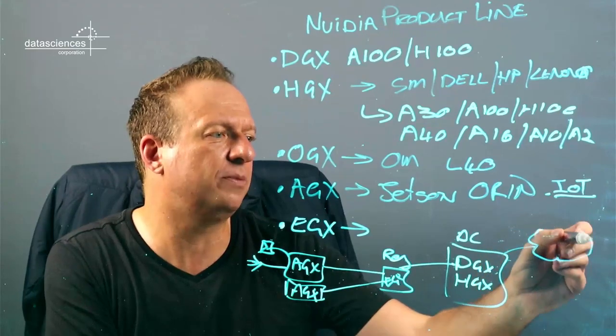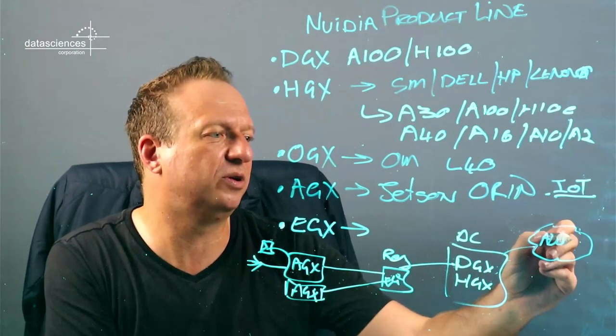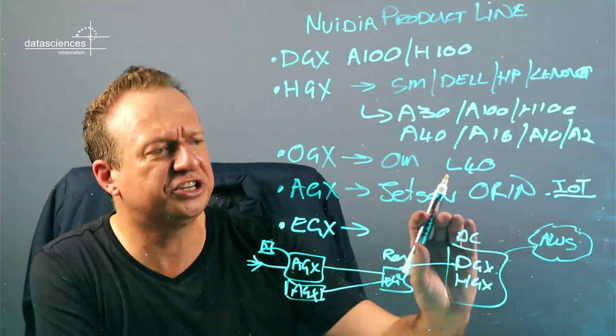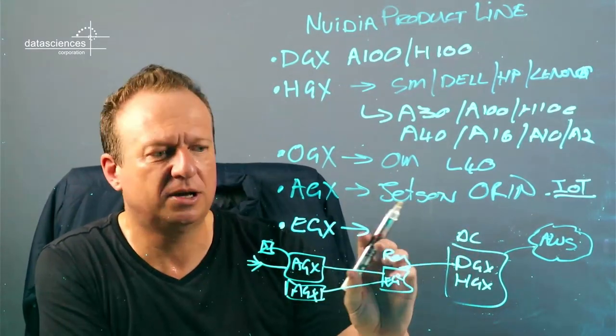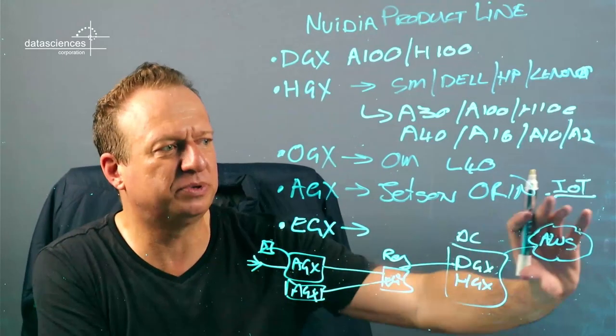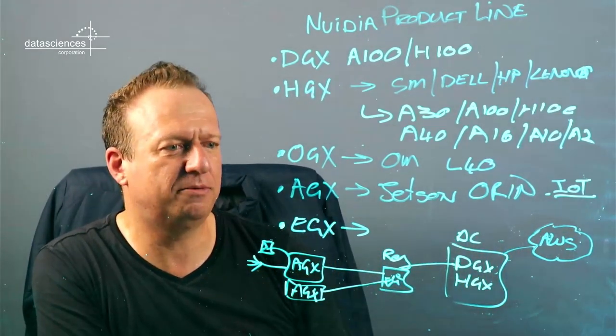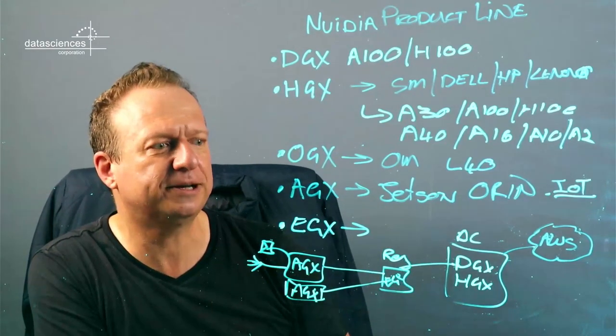It could even encompass having services in AWS or one of the cloud providers itself. So the EGX is an edge solution, but in my mind, it's a composite potentially of all of these components that could make up an inference and training pipeline for your data.